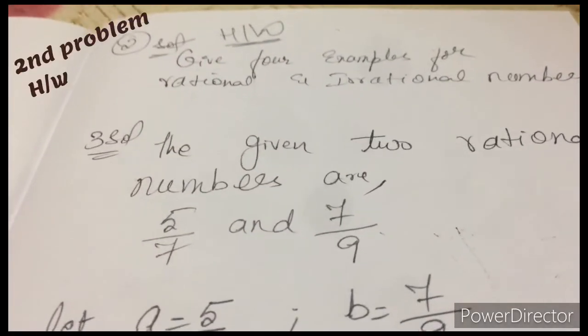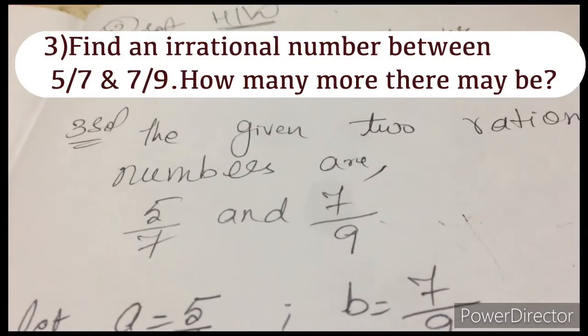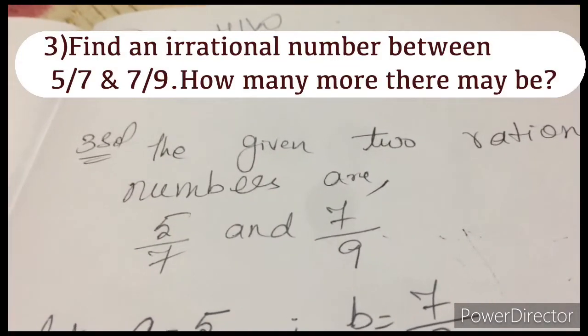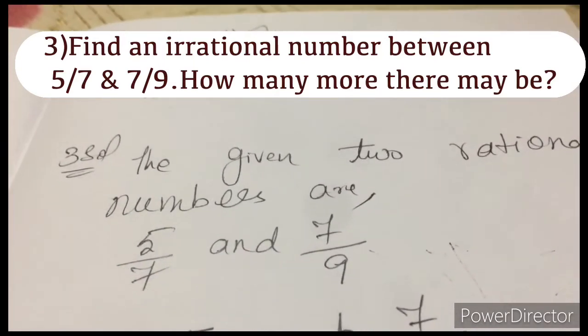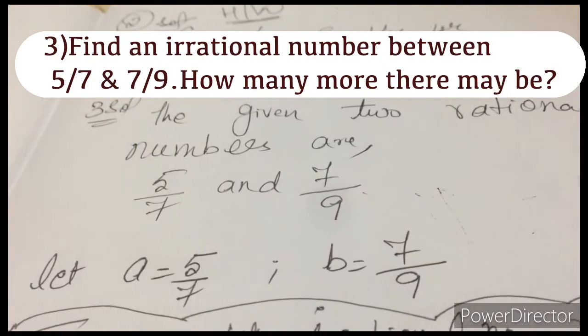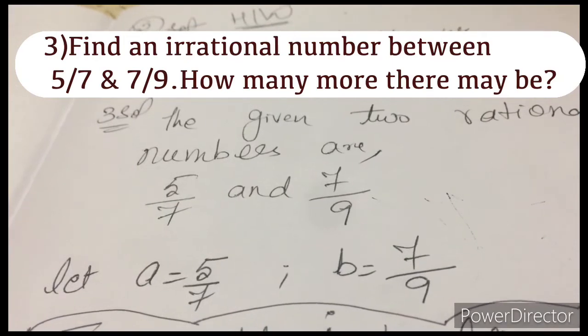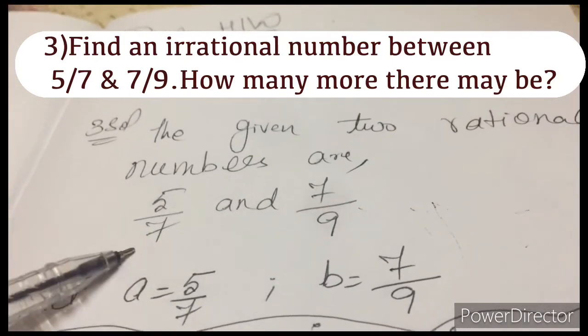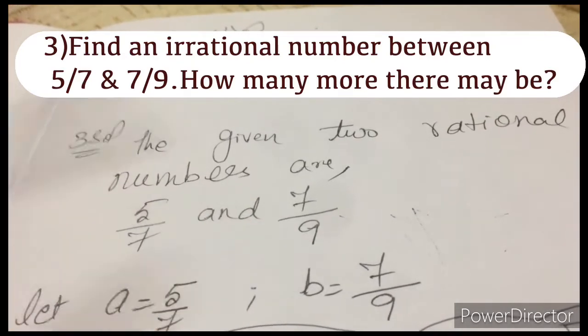Second problem is homework for you. See the third one. The question is find an irrational number between 5 by 7 and 7 by 9. How many more there may be, it is very interesting please. As you know, a rational number between 2 rational numbers is a plus b by 2 formula. Here it is saying us to find out one irrational number between 2 rational numbers.